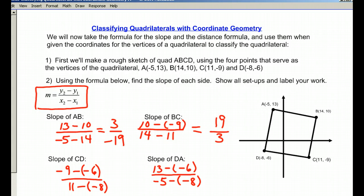The slope of CD ends up being negative 9 plus 6, which is negative 3, over 11 minus a minus, remember that's going to add, so that's going to be 19. And then the slope of DA is going to be 19 over negative 5 plus 8, which is going to be 3.